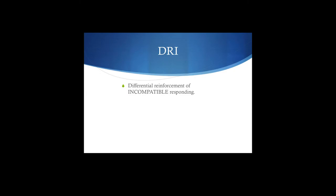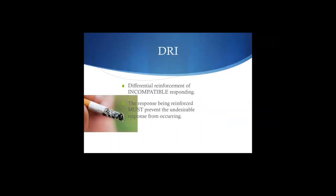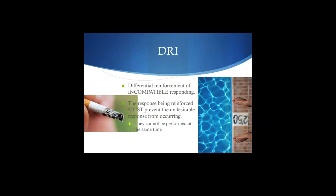DRI — differential reinforcement of incompatible responding. The response being reinforced must prevent the undesirable response from occurring. Think about what's incompatible with smoking a cigarette. Is walking incompatible with smoking? Probably not. Is talking incompatible? Probably not. Is studying in a library? Most libraries you can't smoke in — maybe that works. The example I've got is swimming: if you want to reduce somebody's cigarette smoking, encourage them to swim more. They're not going to be able to smoke while swimming — it's an incompatible response.